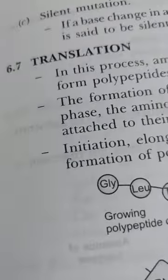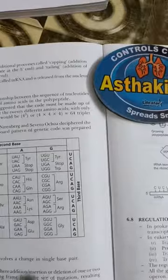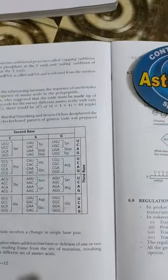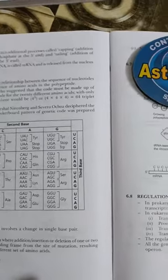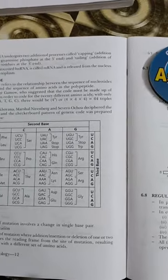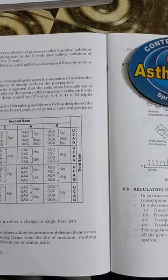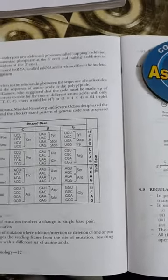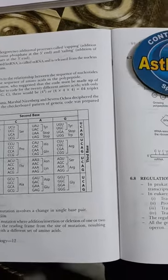Now about genetic code. Genetic code refers to the relationship between the sequence of nucleotides on mRNA and sequence of amino acids in the polypeptide. It was Giorgio Gamow who suggested that the code must be made up of three bases in order to code for twenty different amino acids.